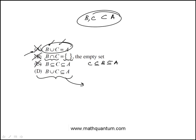And finally, D is the correct answer. That is B union C, all the collection of elements in B and C together has to be a subset of A because both B and C are subsets of A. So the answer is D.